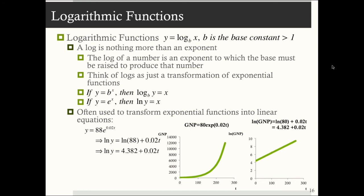Many of you don't know them yet, and that's okay. But there are these certain rules that we can use to transform this equation. We can transform it to become, if we take the natural log of both sides of the equation, we have the natural log of y is equal to the natural log of 88 plus 0.02t, which just simplifies to the natural log of y is equal to 4.382 plus 0.02t, which is just a linear equation. And econometricians like to create linear equations because they can create maybe better fits for models.